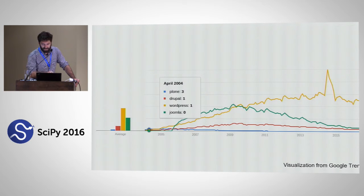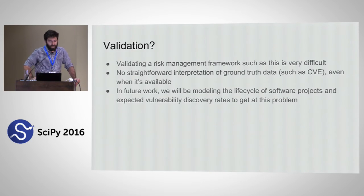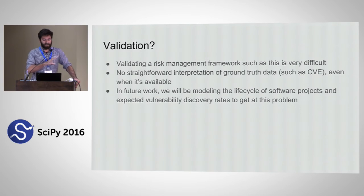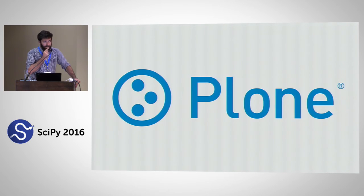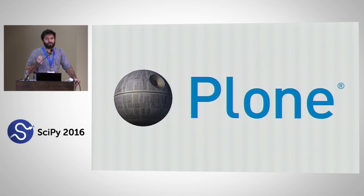It may also be because Plone is far less popular than the other projects. There was a hot minute around April 2004 where Plone was searched for more on Google than Drupal, WordPress, and Joomla, but as the Google Trends chart shows, it was quickly outstripped by the others. So the small number of recorded vulnerabilities could simply be due to the amount of effort that's gone into inspecting them — we don't know. Bottom line: validating this kind of risk management framework is very difficult, even when ground truth data like CVE data is available. Plone might be a lot more like the Death Star than anyone expected — however robust it is, if it has a security problem, no one would know because no one's looking at these core libraries.